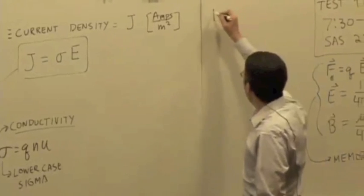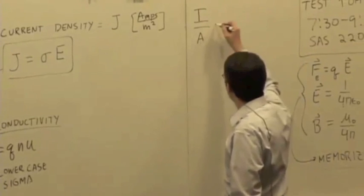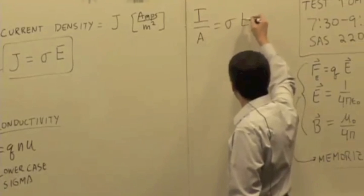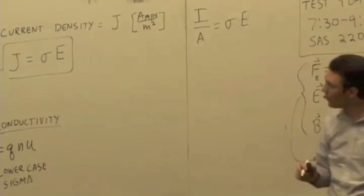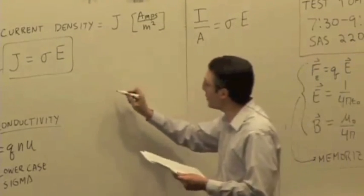Okay, so we've got current per unit area is equal to conductivity times electric field.